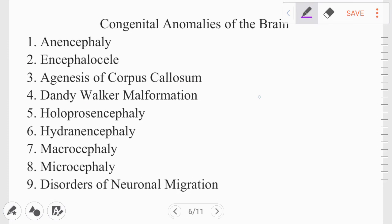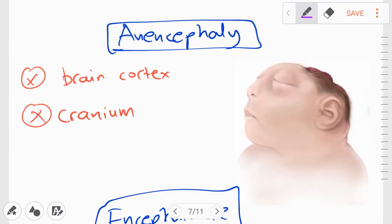So now we'll move on to the congenital anomalies of the brain. First of all, anencephaly. As you can see from the image, there is no cortex or cranium present, but there is a rudimentary brainstem present inside.